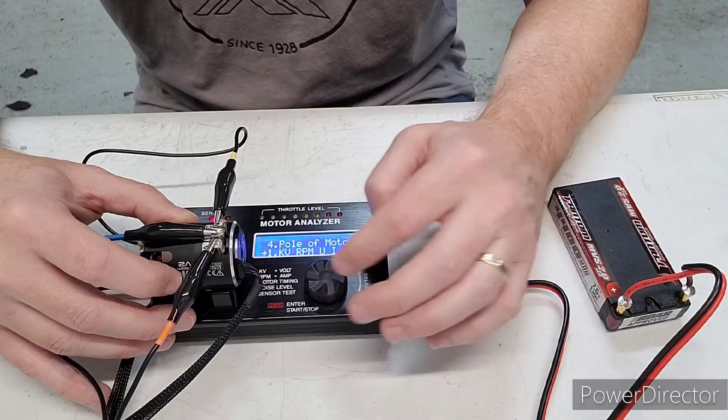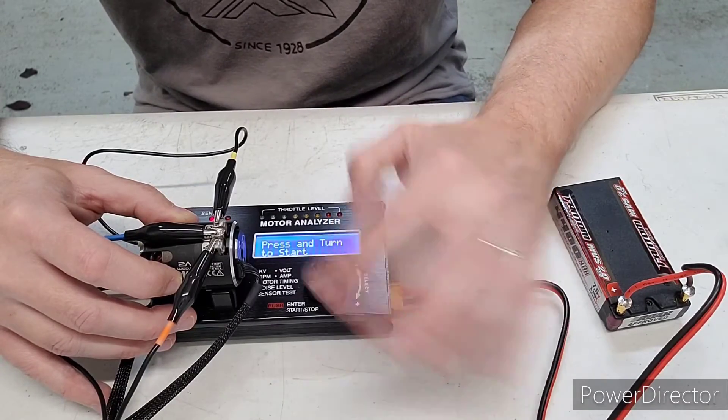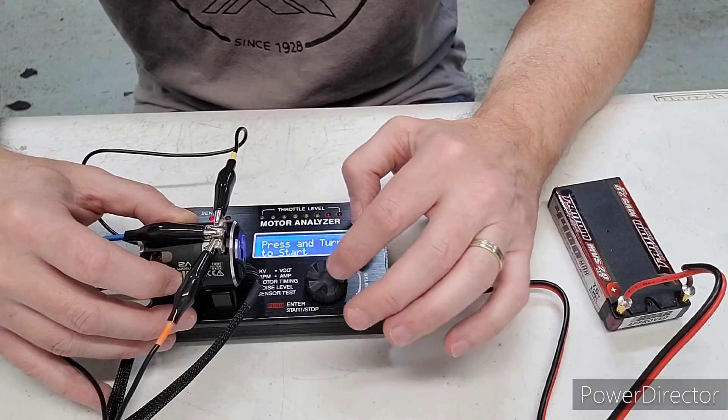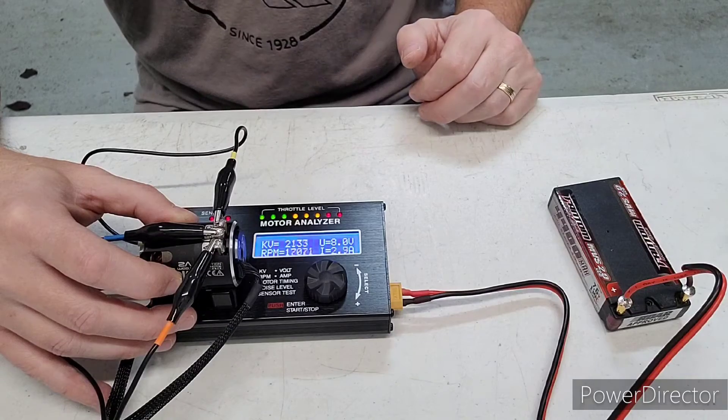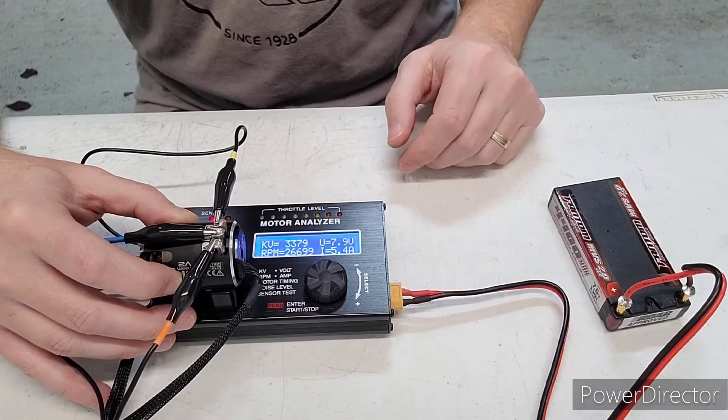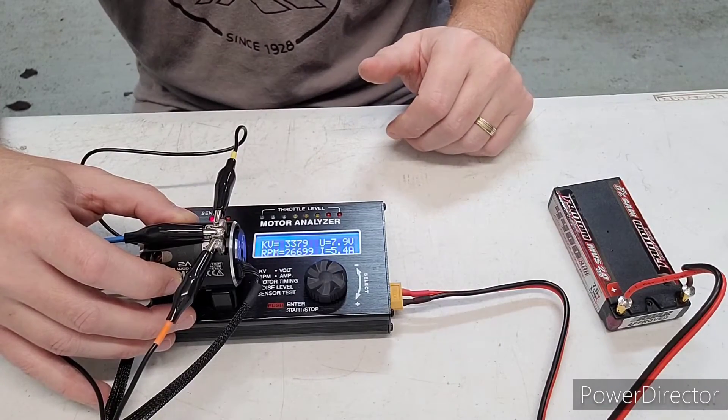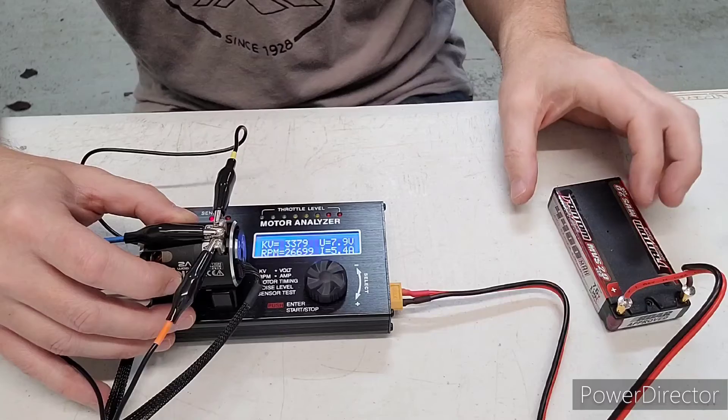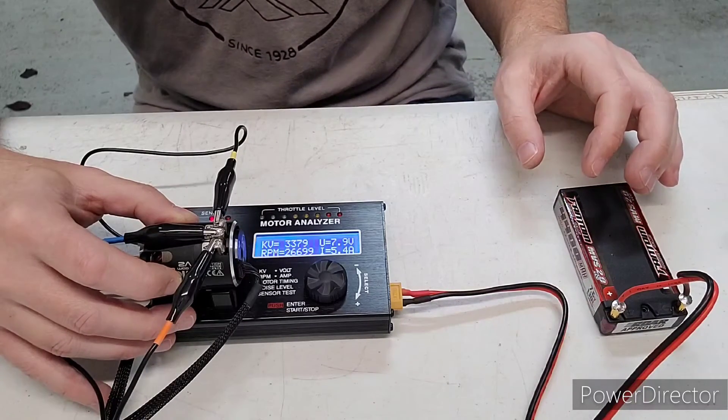So come back to this menu and push one and then you push start and then you'll move this wheel to spool it up to max RPM. And once that motor kind of tops out at max RPM and KV, then you want to cut it off immediately because you don't want to let this thing free spin for too long.